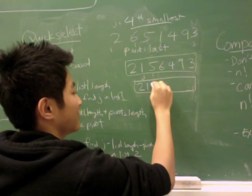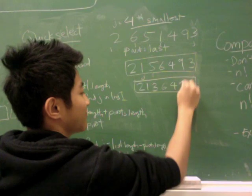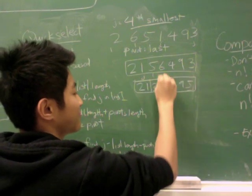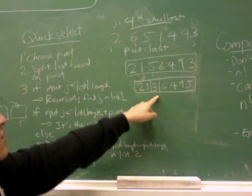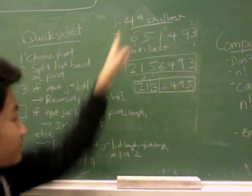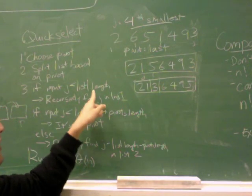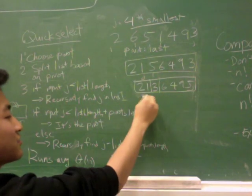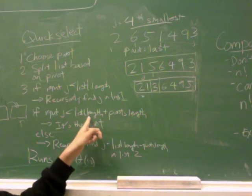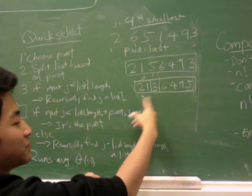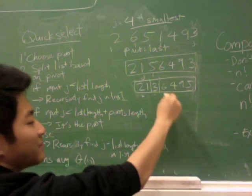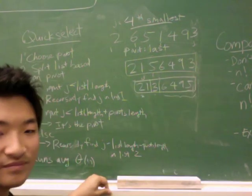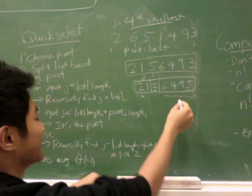Two, one, three, six, four, nine, five. Good. And so we've had our list one and list two. j is four. Four is greater than list one dot length, which is two. Four is also greater than list one dot length plus pivots dot length, which is three. So we know that we need to find this here in the second list.